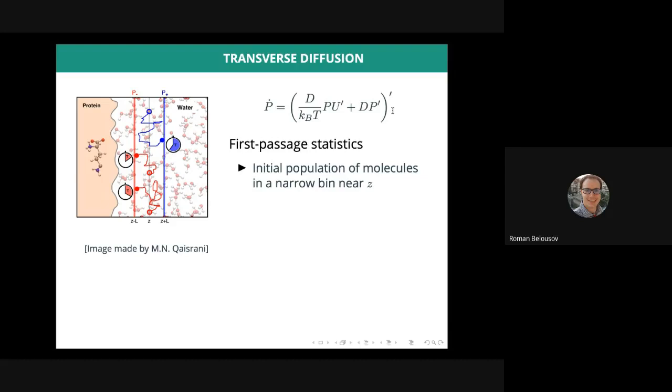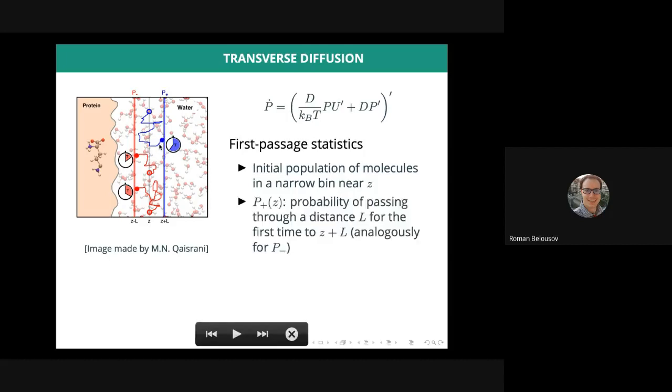To quantify our observations of a diffusion process, we adopt the first passage statistics as follows. Take a population of molecules in a narrow bin and observe how each molecule diffuses until it passes through a given distance L in any direction for the first time, hence comes the name first passage. Then a fraction of the whole population of molecules will travel to the positive direction of z, and the other fraction in the opposite direction. Thus we can determine the probability of the positive and negative first passage events P+ and P- respectively, that must sum up to one.